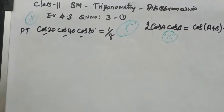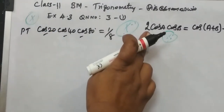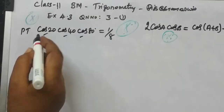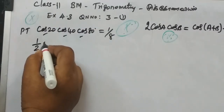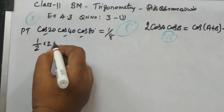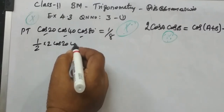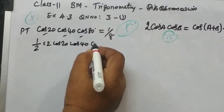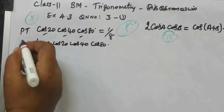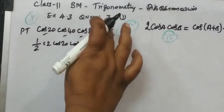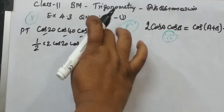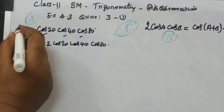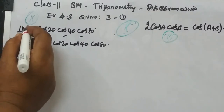So in this procedure, we have 2 cos A cos B equal to 2. Multiply and divide by 2. So cos 20, cos 40, then cos 80. Now, let's consider the LHS. You are considering LHS.